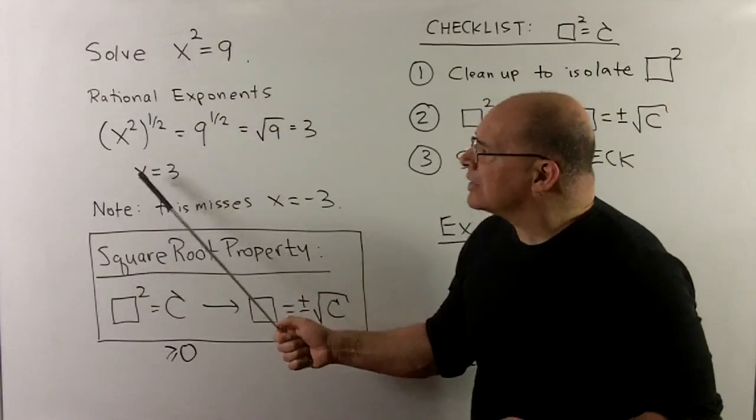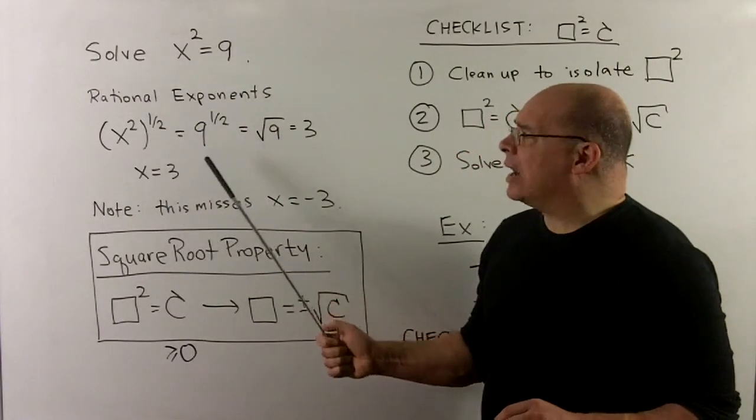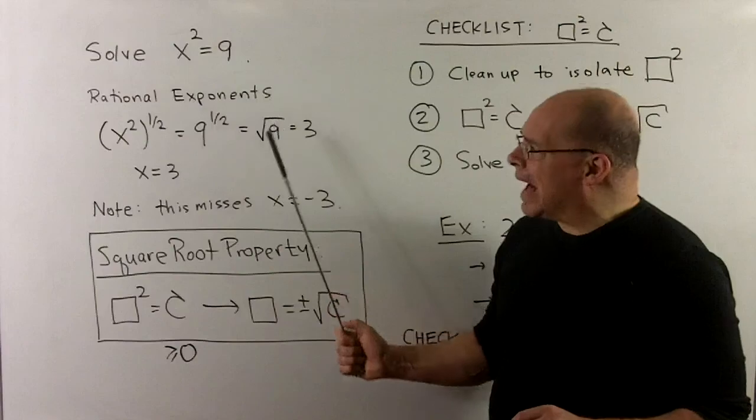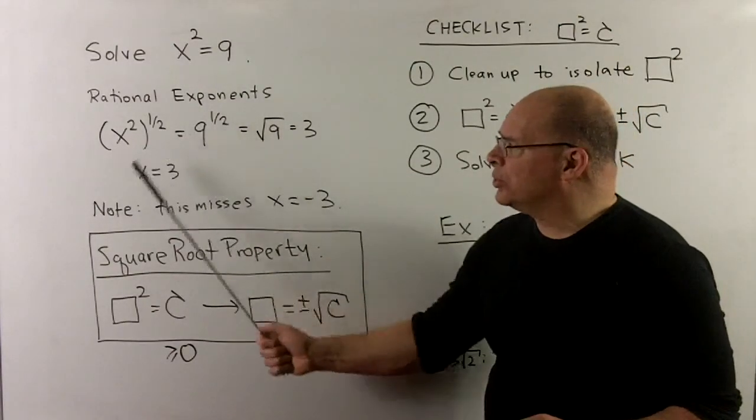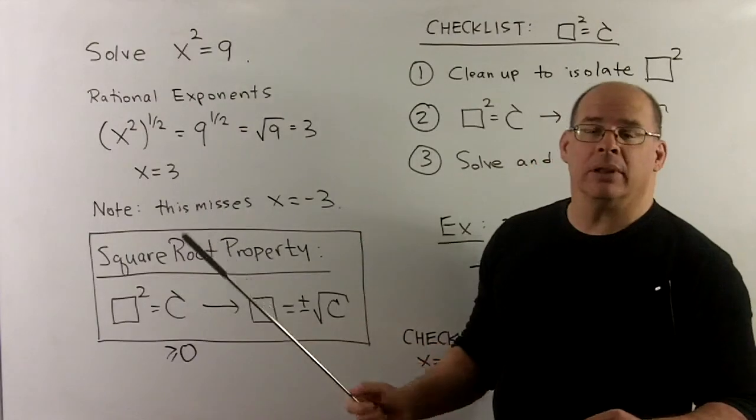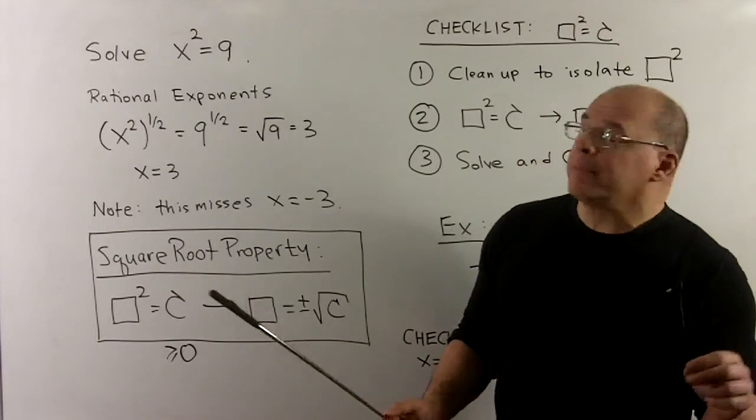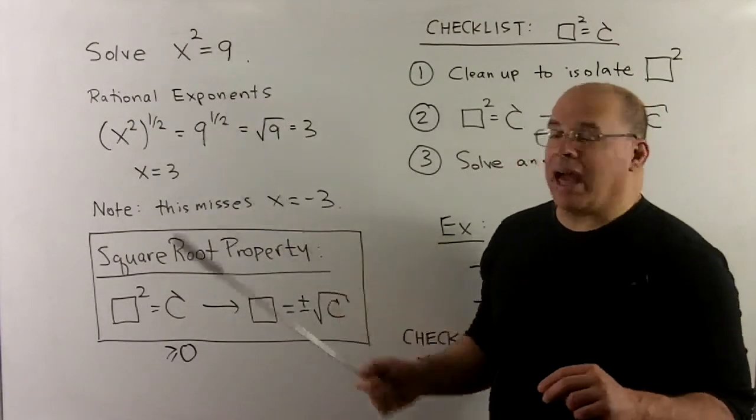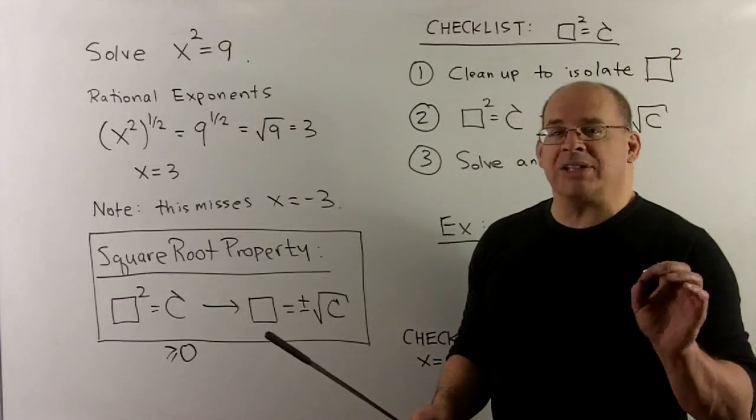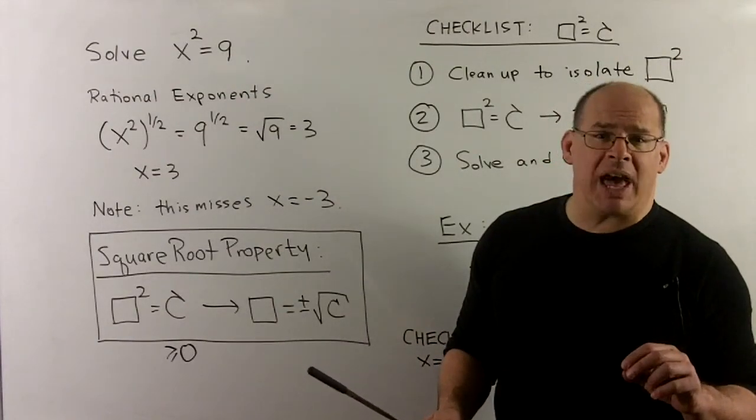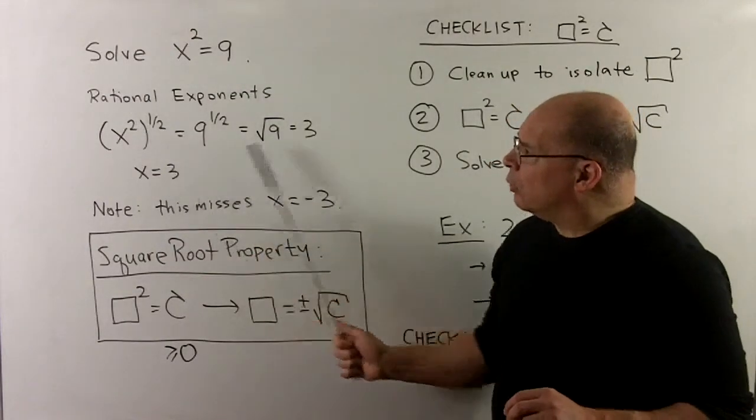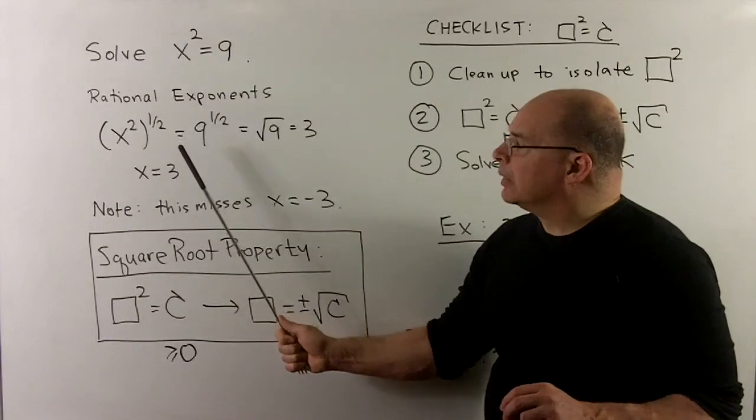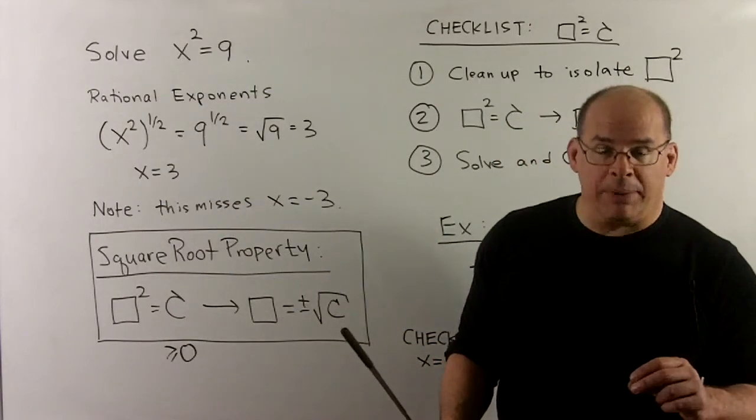So we'll get our x on this side, we'll get 9 to the 1 half, which is the positive square root of 9, and so that's just going to be a 3, and our solution is x equal to 3. Now, if you think back, x squared equals 9, that's just asking for all possible square roots of 9, so we're going to miss the solution x equal to minus 3 if we go with this method.